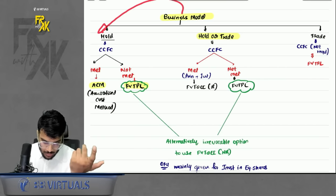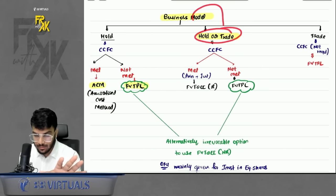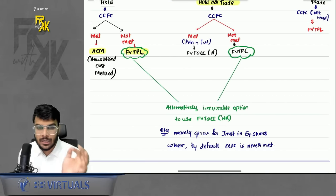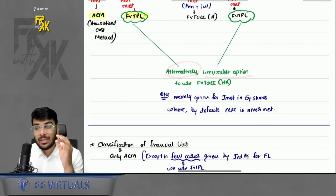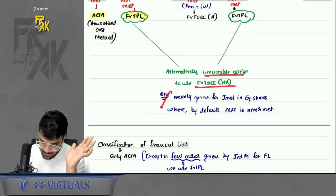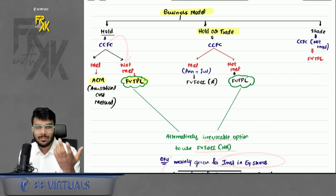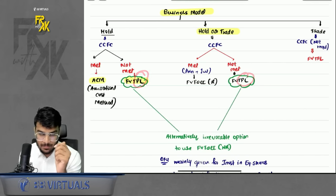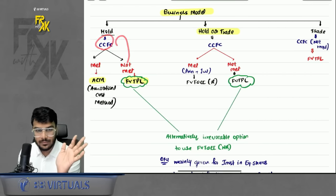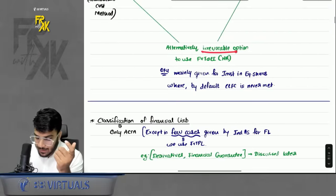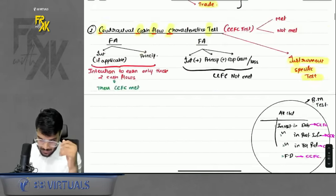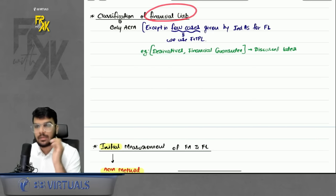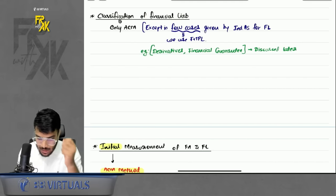In cases where FVTPL would be directly recommended — particularly for investment in equity shares where CCFC is never met — the standard also gives an irrevocable option to choose FVTOCI-NR instead, because it is harsh to send all fair value changes to profit and loss. This is an irrevocable option available to the company. For financial liability, there is only one method — ACM. Since there is only one method, no test needs to be conducted, though for specific cases like derivatives and financial guarantees, FVTPL is used as defined by the standard.